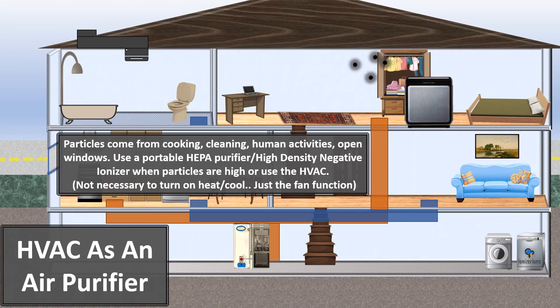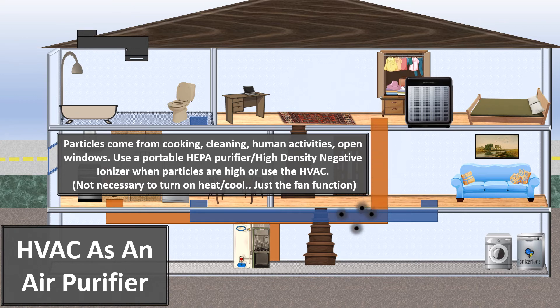Particles come from cooking, cleaning, human activities, and open windows. We use a portable HEPA purifier or high-density negative ionizer when particles are high, or we can use our HVAC system itself. The HVAC system is an air purifier — you can just turn it on to clean the air particles in your home.